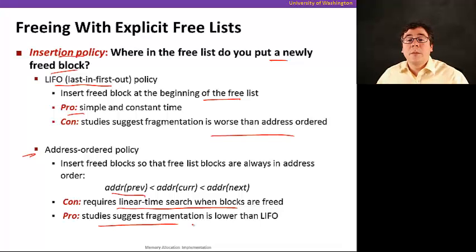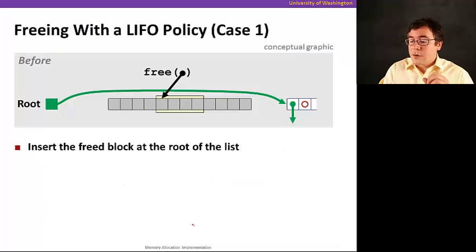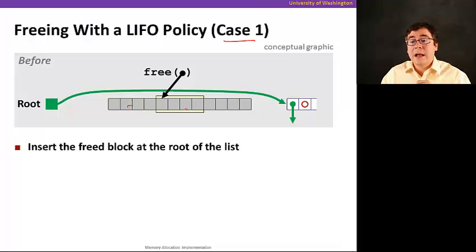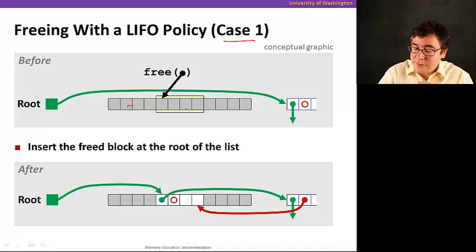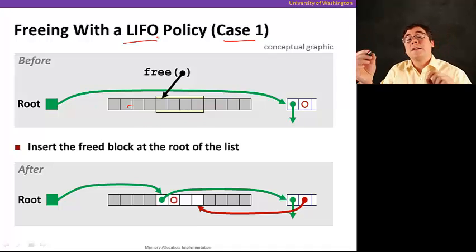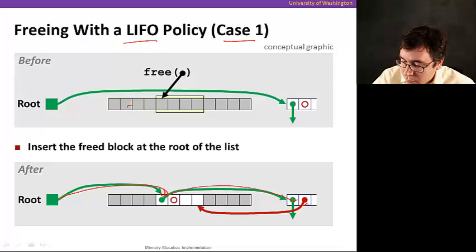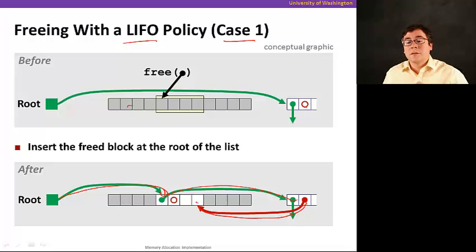Let's see how the LIFO policy works. In the first case, we free a block in the middle of something allocated with no adjacent free blocks. Since we're doing LIFO, this block gets inserted at the beginning of the list. The root now points to this new free block, and we update the pointers accordingly. The old first block now points back to the one just inserted.